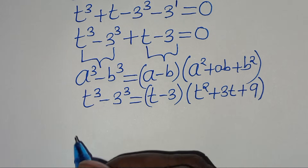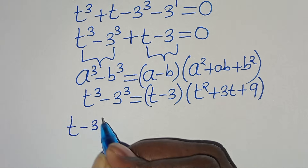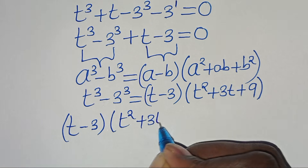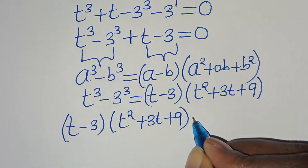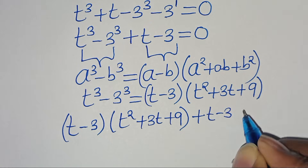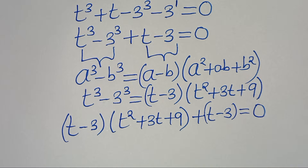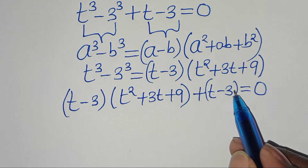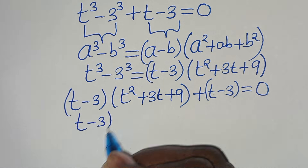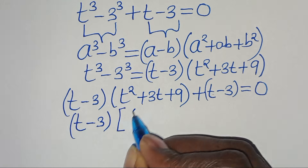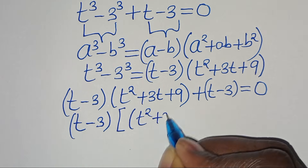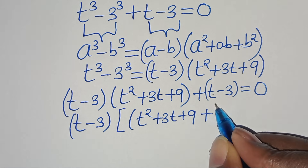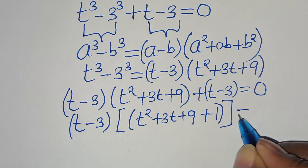So now we have (t - 3)(t² + 3t + 9) plus (t - 3) equals 0. We can factor out (t - 3), giving us (t - 3)(t² + 3t + 9 + 1) equals 0.